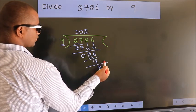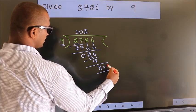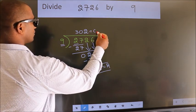No more numbers to bring it down. So we stop here. This is our remainder. This is our quotient.